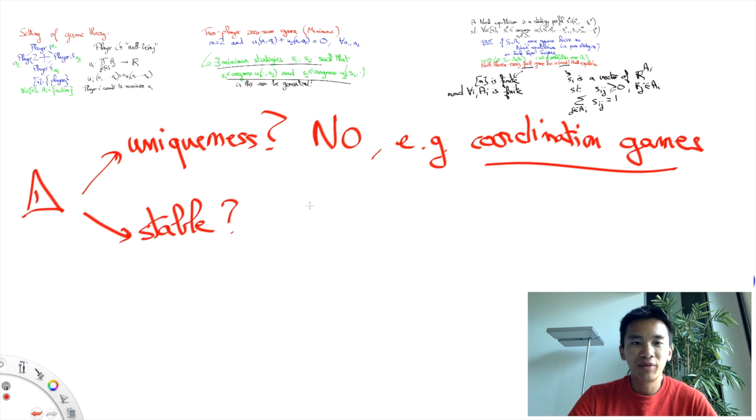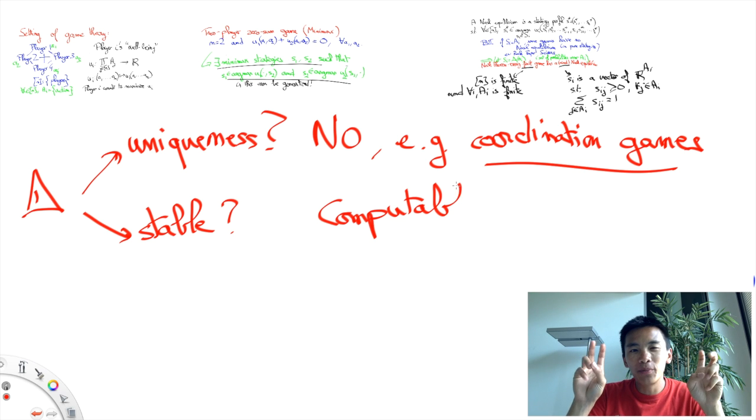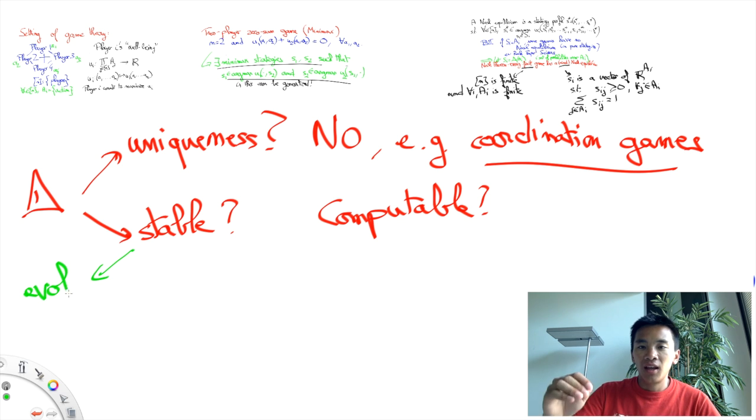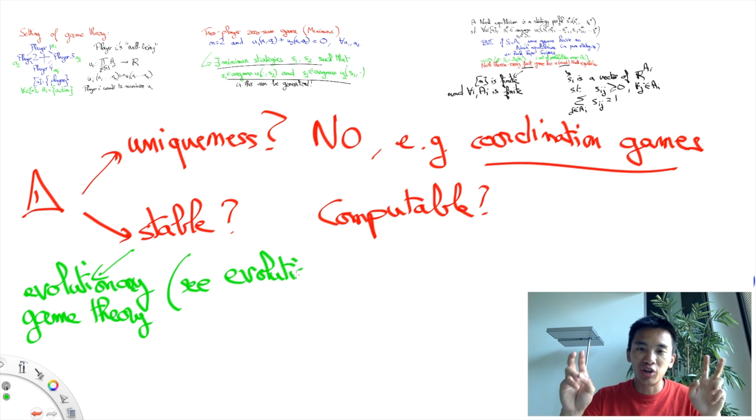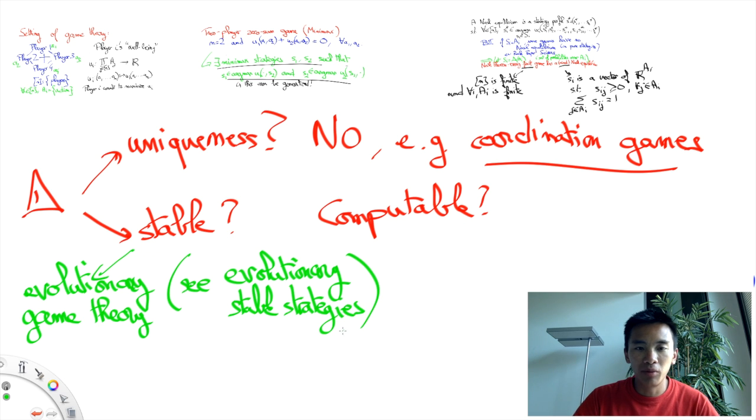Second, Nash equilibria are not guaranteed to be stable or computable in certain senses of these words. More precisely, evolutionary game theory rather adopts the concepts of evolutionary stable strategies which only some of the Nash equilibria are.